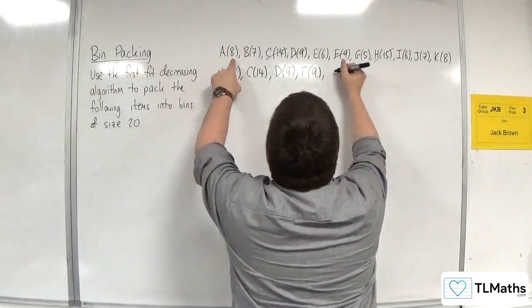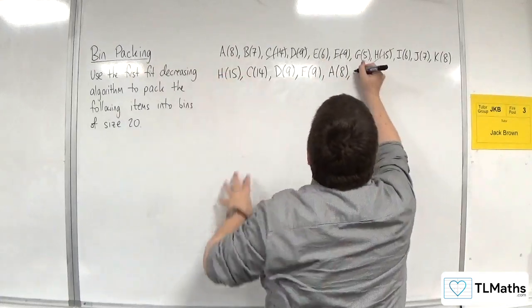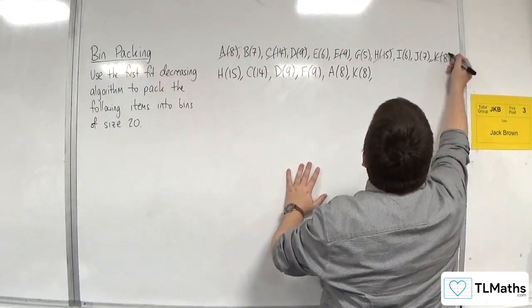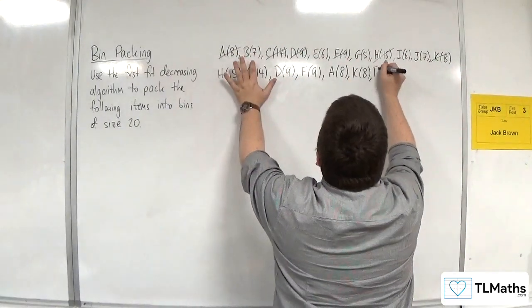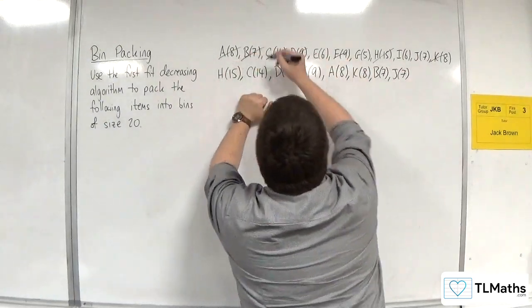Then we've got the 8s. So we've got A, 8. We've got another 8. Yeah, we've got K, 8s there as well. Okay, so we've got those sorted. Then we've got the 7s. So we've got B, 7. We've got J, 7. So they're gone.